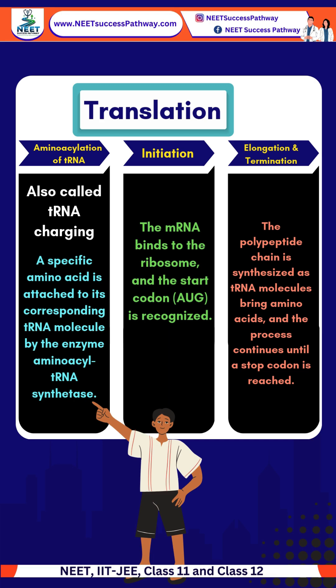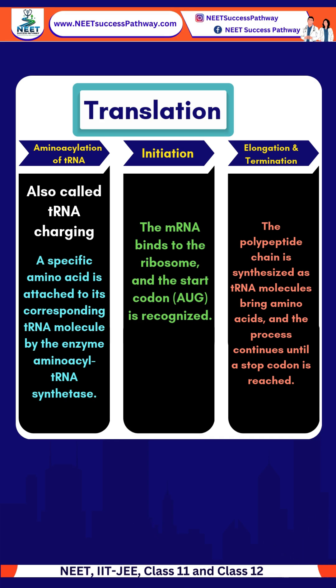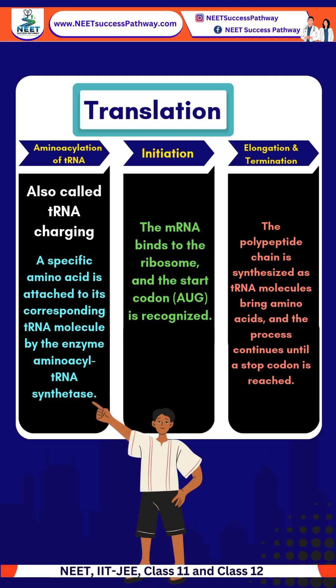The second phase, which is the initiation phase, involves the binding of mRNA to the ribosomes, and the start codon AUG is recognized. The third and final phase involves the synthesis of a polypeptide chain using tRNA molecules, which bring different amino acids from different parts of the cytoplasm.